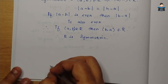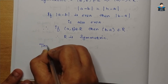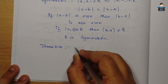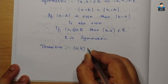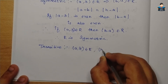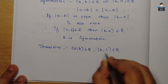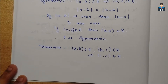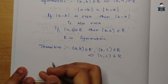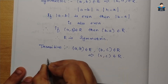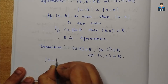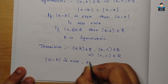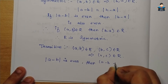Now we will check the transitive condition. The transitive condition states: if (A, B) belongs to R and (B, C) belongs to R, this implies (A, C) belongs to R. So if this condition is satisfied, and modulus of A minus B is even, then A minus B is even.